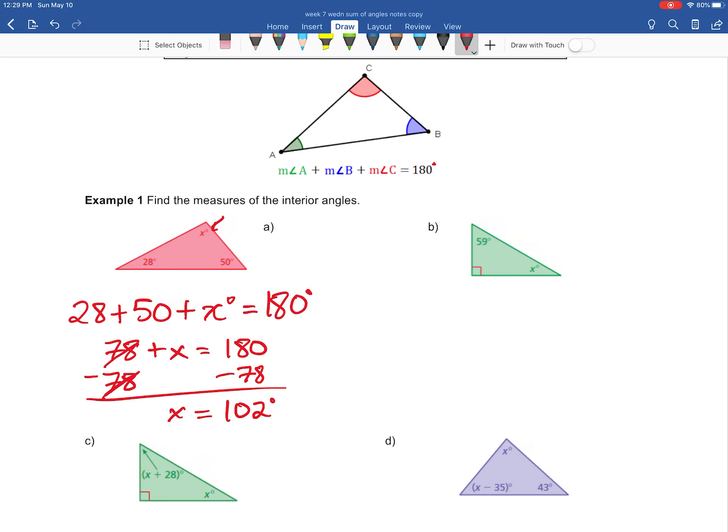So this is all the work that I would need on a homework assignment, for example. So 180 minus 78 would come out to be 102 degrees. So there we have found our x value.